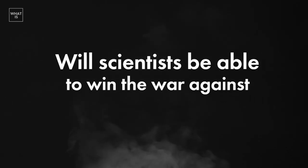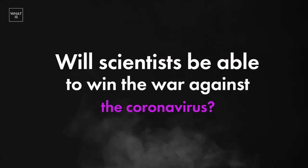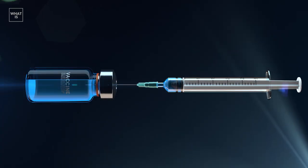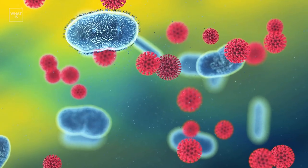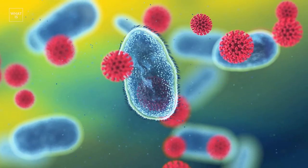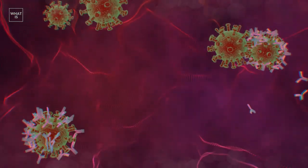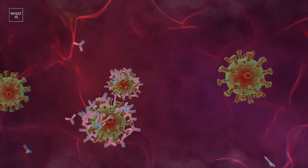Will scientists be able to win the war against all groups of the coronavirus? Perhaps, but it should be vaccines that induce cellular immunity. Despite the fact that Omicron is quite efficient at evading antibodies, cellular immunity, this is the second branch of our defense system, works very well against this strain.